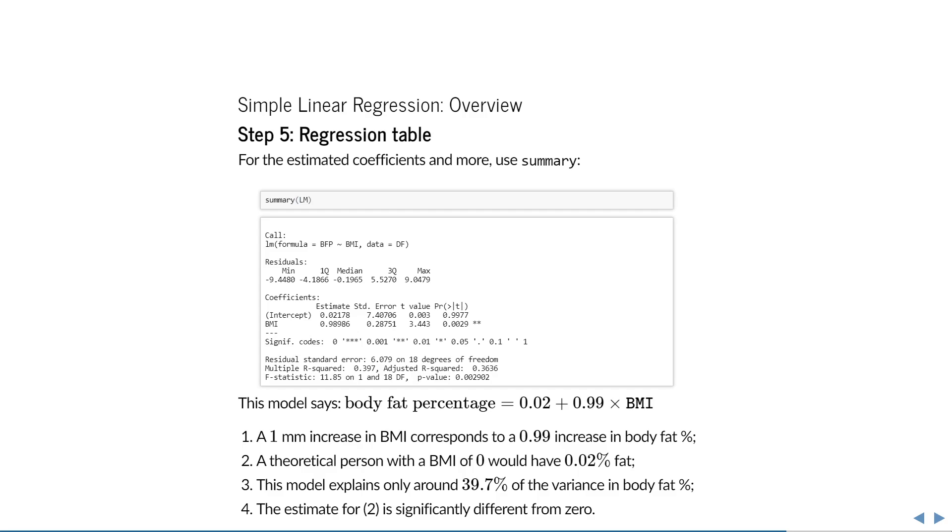So what does this all mean? What do we conclude with regards to the research question? First of all, we estimated the intercept and the slope to see how body fat percentage changes on average when BMI does. Second, we expressed how much of the variance in body fat percentage is explained by BMI, namely 39.7%. We can even perform significance tests with simple linear regression. If the slope is significantly non-zero, then there is a significant relationship between body fat percentage and BMI.